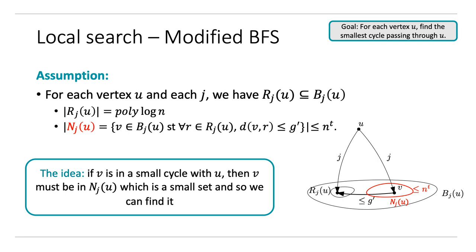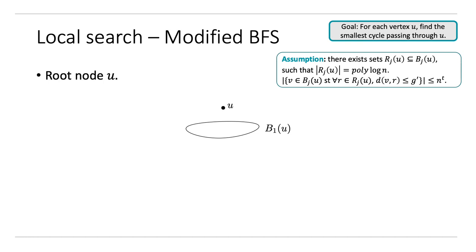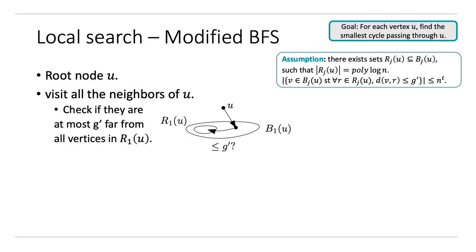Suppose we are going to do BFS from u. We go through all the neighbors of u like a normal BFS, except that each node we visit, we check if it has distance at most g prime to all vertices in R_1 of u. If it does, then we keep it; if it is farther, then we throw it away. So we have this set of vertices, and because of our assumption, we keep at most N to the t vertices in B_1 of u as we wanted.